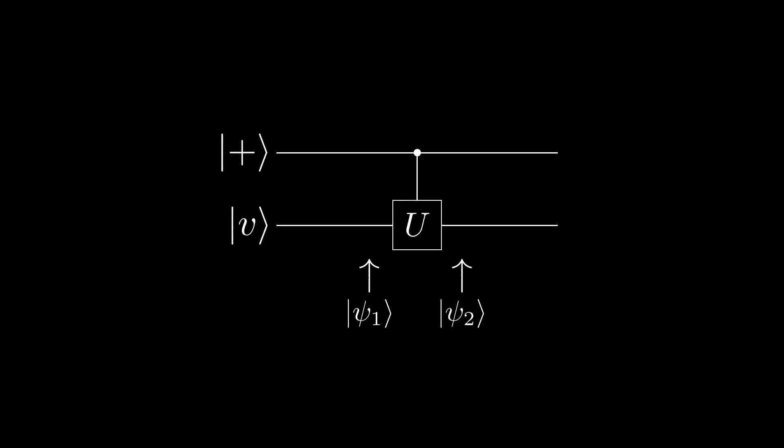As you can see, we have a qubit in the plus state, and another qubit in the state v. We also have an arbitrary controlled U operation.